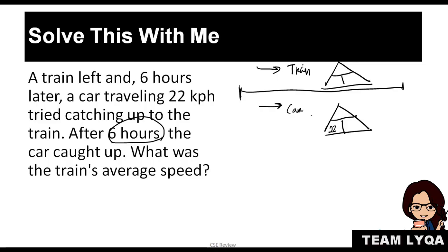The train left, the car left 6 hours later. The only speed mentioned is the car. The car's speed is 22 kph. And it traveled for 6 hours. Because the train went first for 6 hours. Then the car followed. After 6 hours, they caught up. That means the car traveled an additional 6 hours. We don't know the distance yet, but we'll use it later. The train also has a distance. But we're looking for the average speed of the train. That means this is X. Now the next question is, how many hours did the train travel? We said it went first for 6 hours. Then the car's 6 hours started. That means the total time the train traveled is 12.